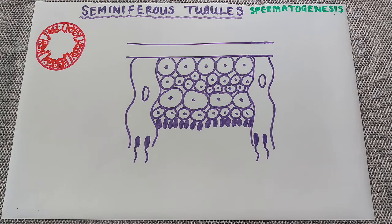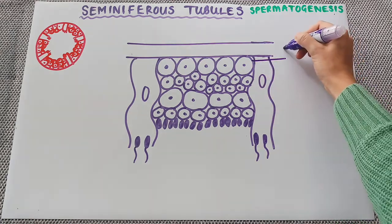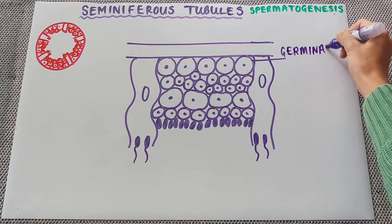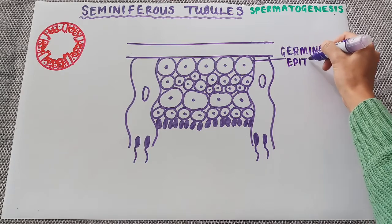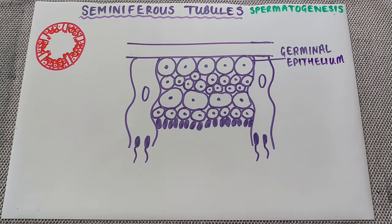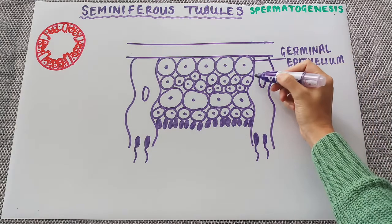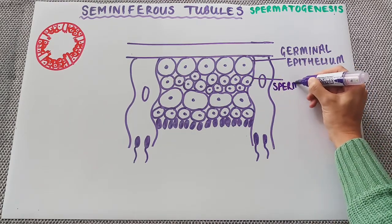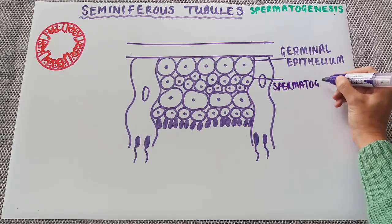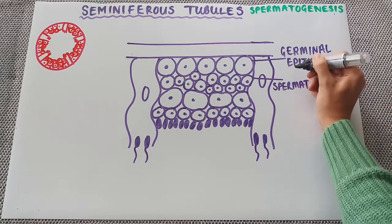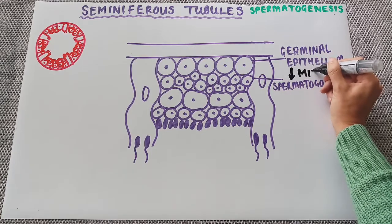So at the start, these cells on the outside are the germinal epithelium cells. They are constantly going through the process of mitosis — these are diploid cells going through mitosis — and they are producing these cells here, which are spermatogonium. These are formed through the process of mitosis.